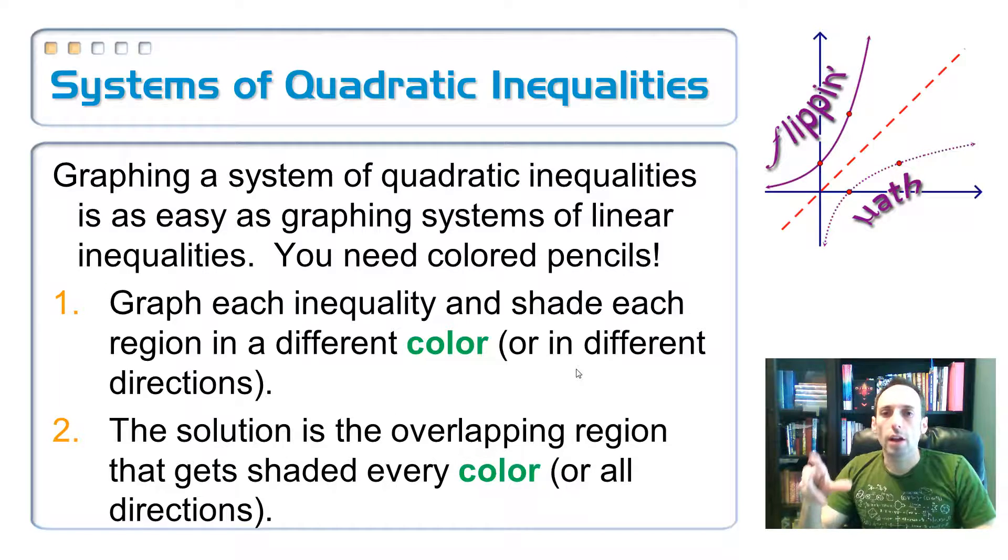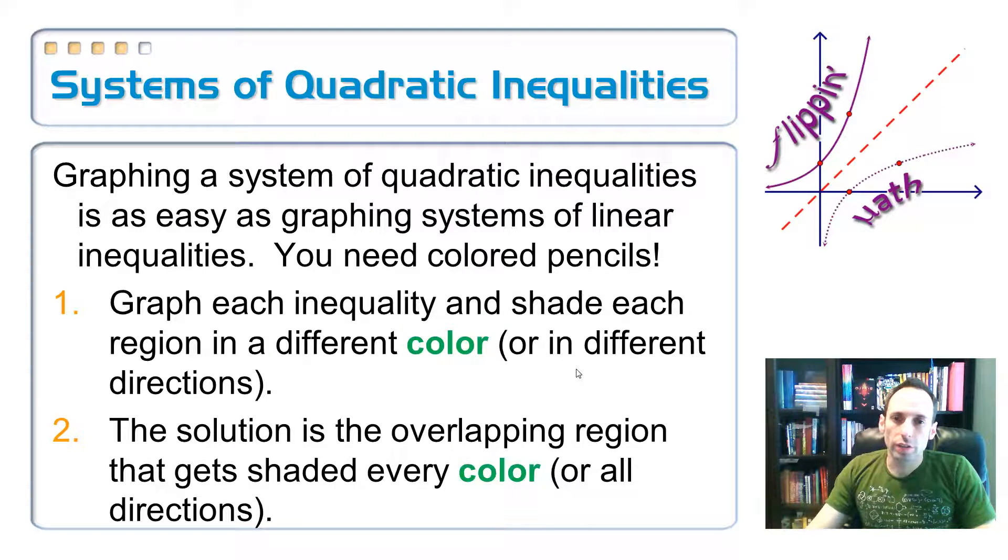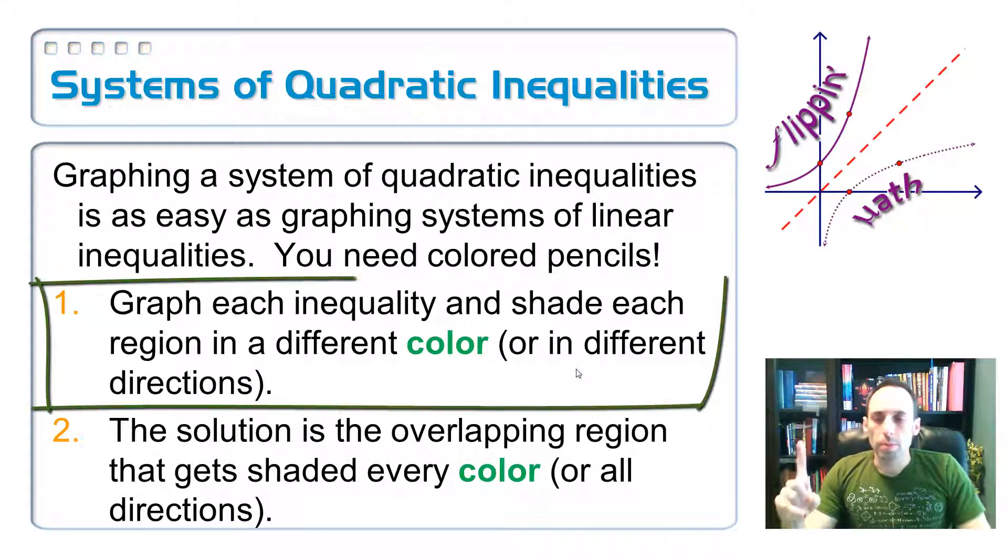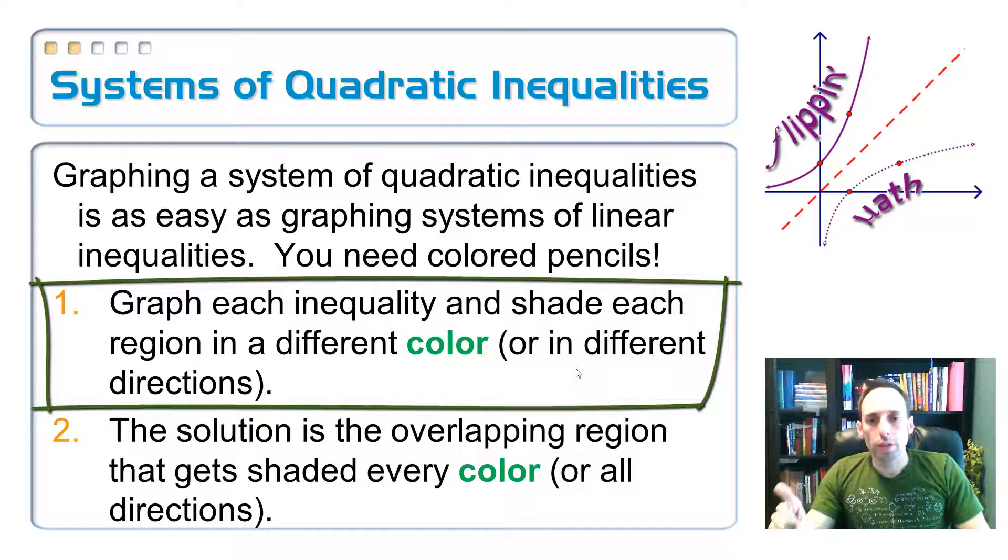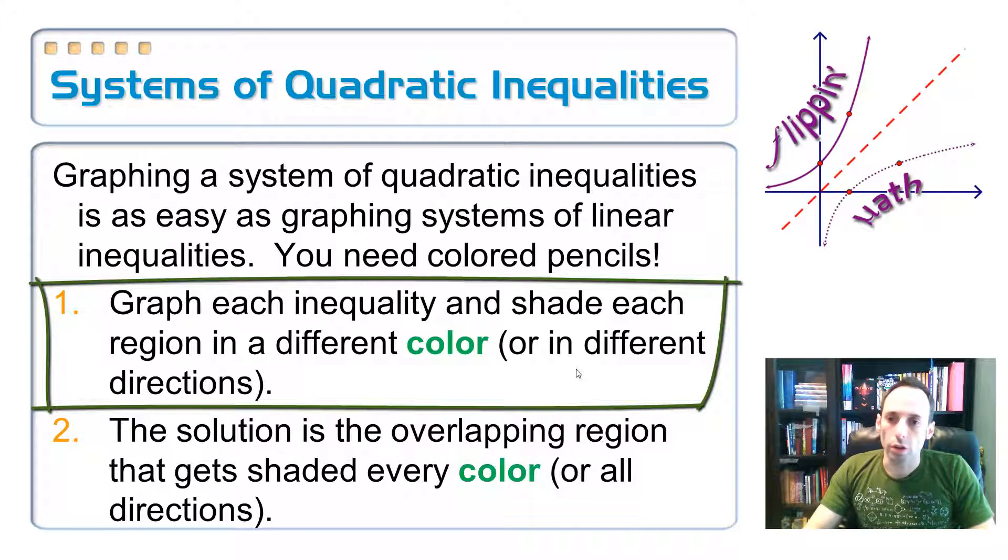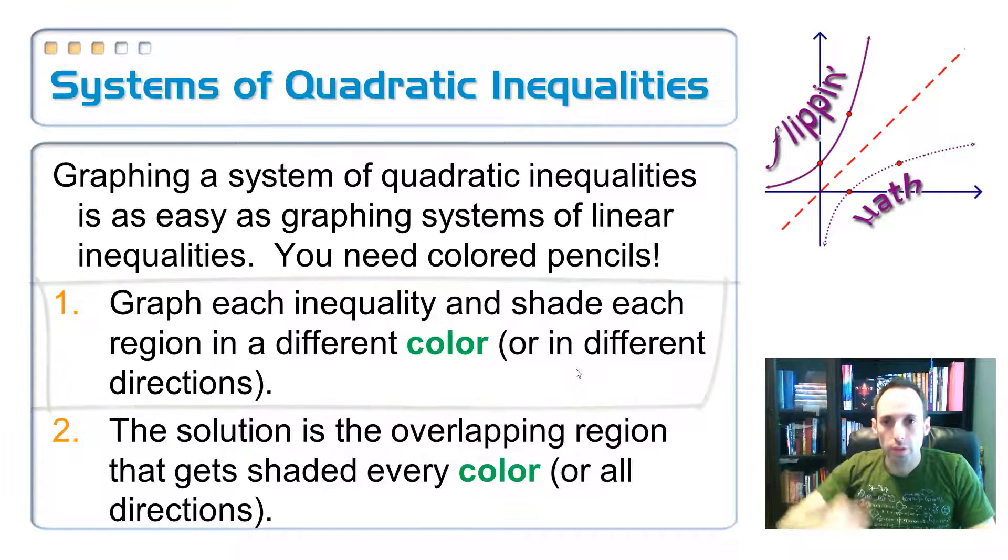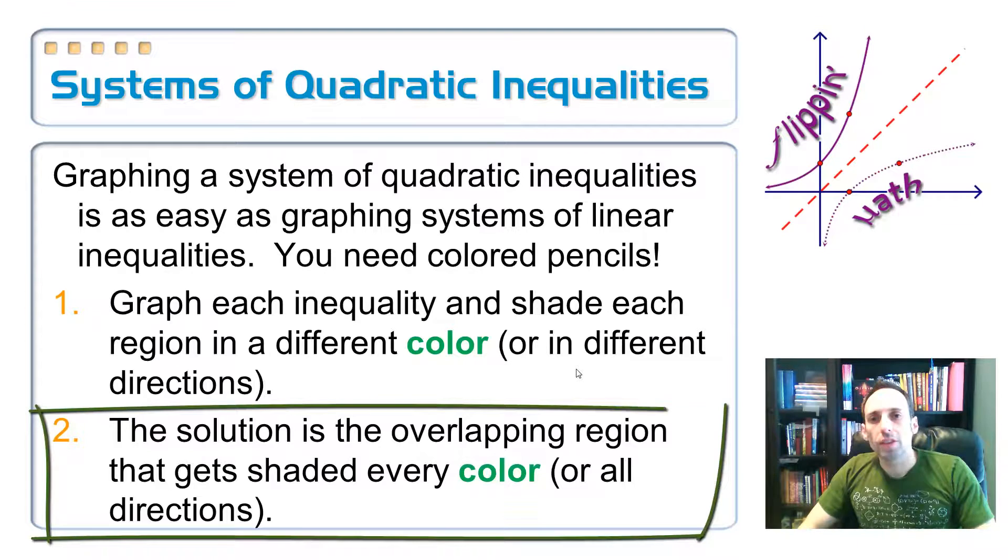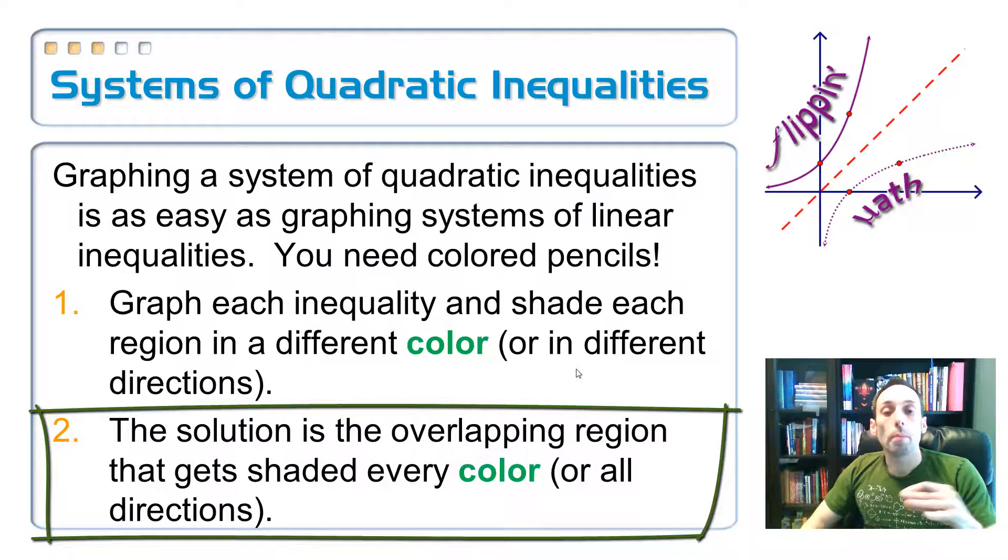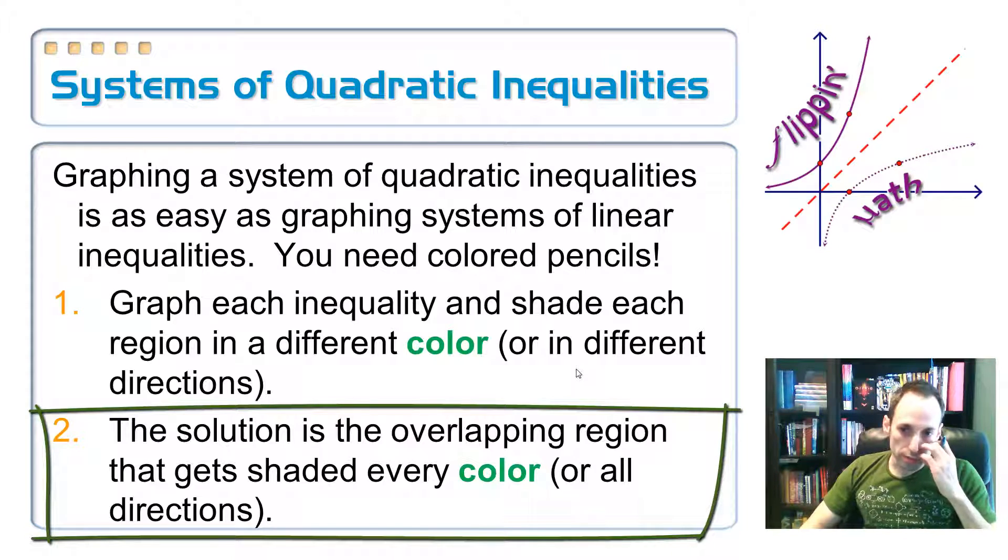When we're graphing a system of quadratic inequalities, as long as you have some colors, it's going to be easy. If you don't have colors, you can always shade in different directions. Step number one, graph each inequality and shade each region in a different color. Or maybe shade one horizontally, the other vertically. Your solution is the overlapping color, the colors that are on both of the shaded regions.